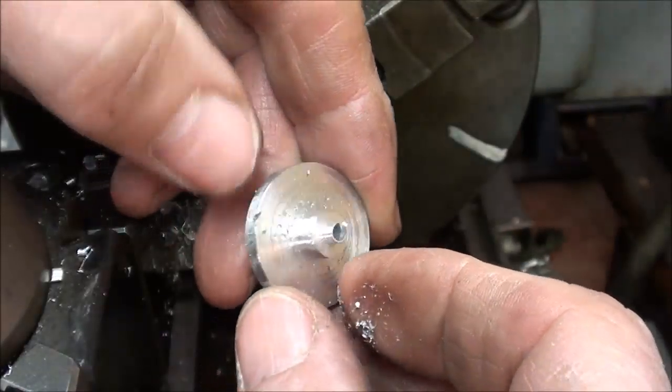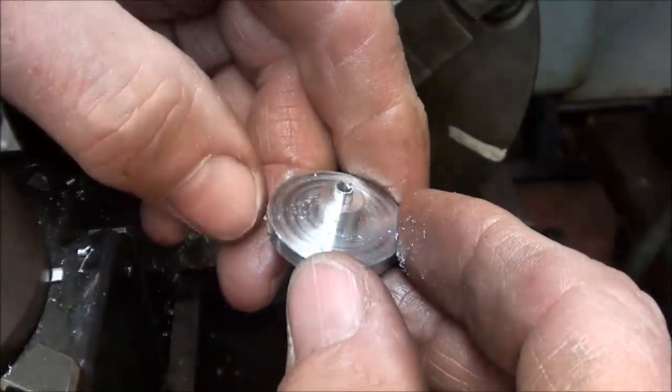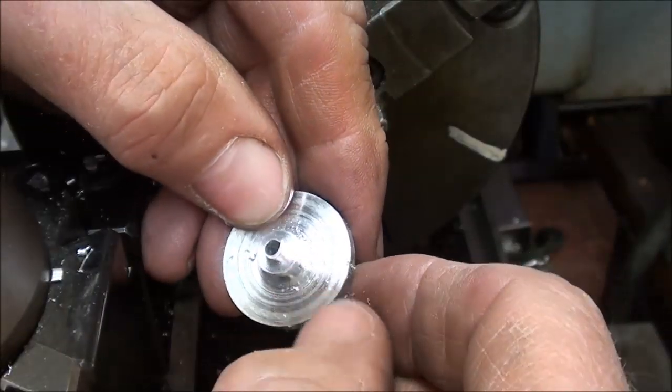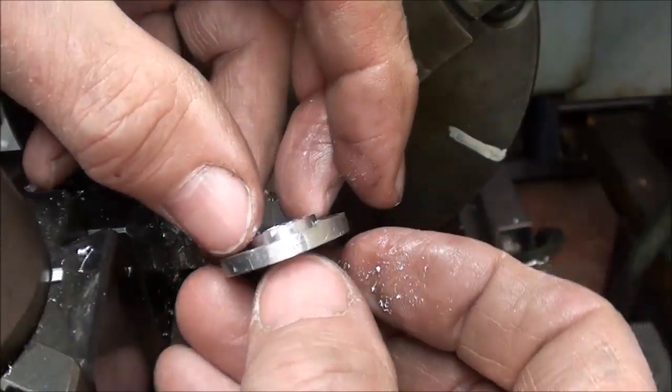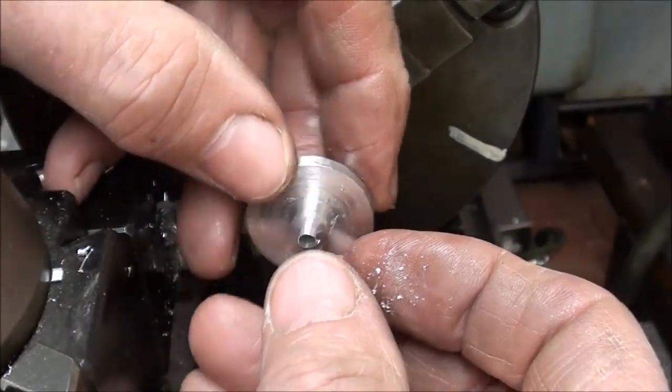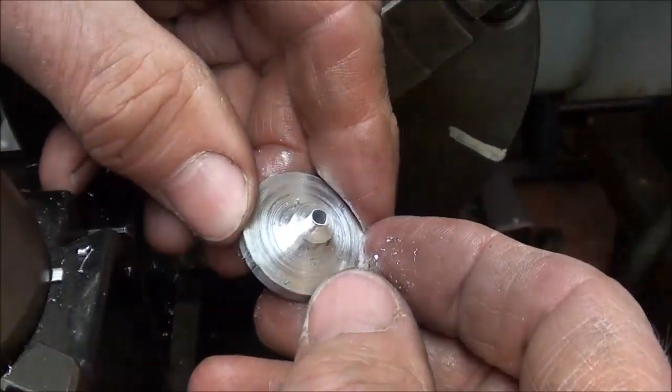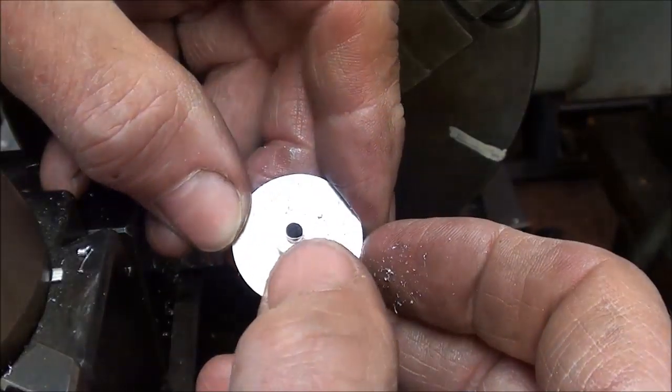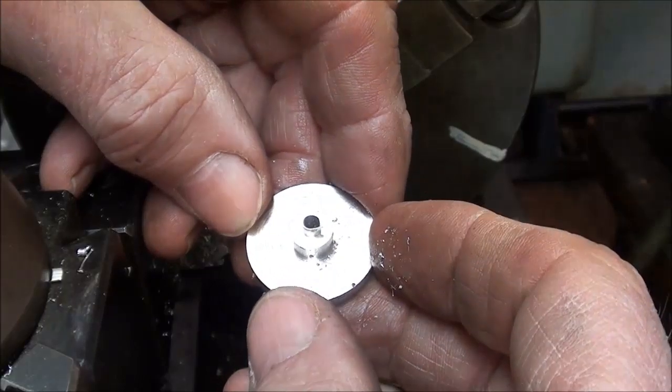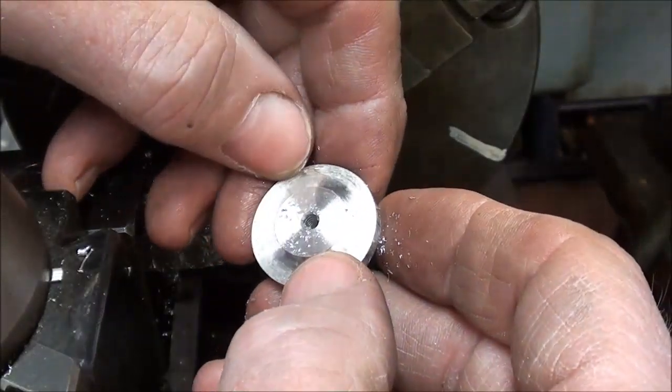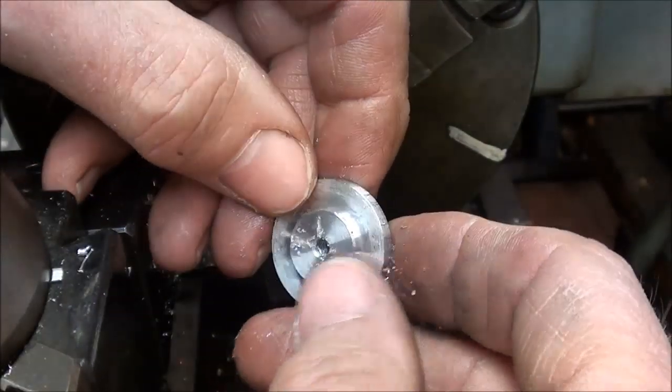And that's what it looks like and everything should be concentric now. If this finish isn't good enough for you, it can again be held by the step here and faced off, but that's good enough. I'll take that burr off and countersink that lightly. This piece is done except for the holes.